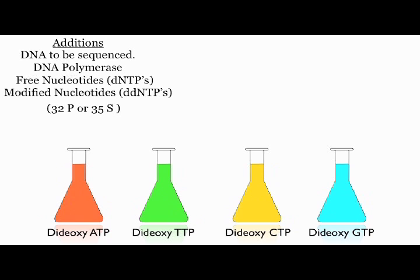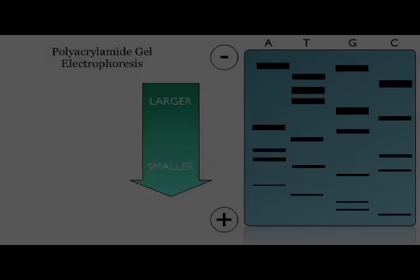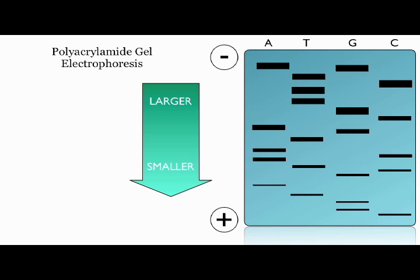For example, a DNA strand taken from the flask to which dideoxy ATP was added will end in an A, or adenine nucleotide. We can use this information to determine the sequence of DNA by reading across the various bands on the x-ray film.